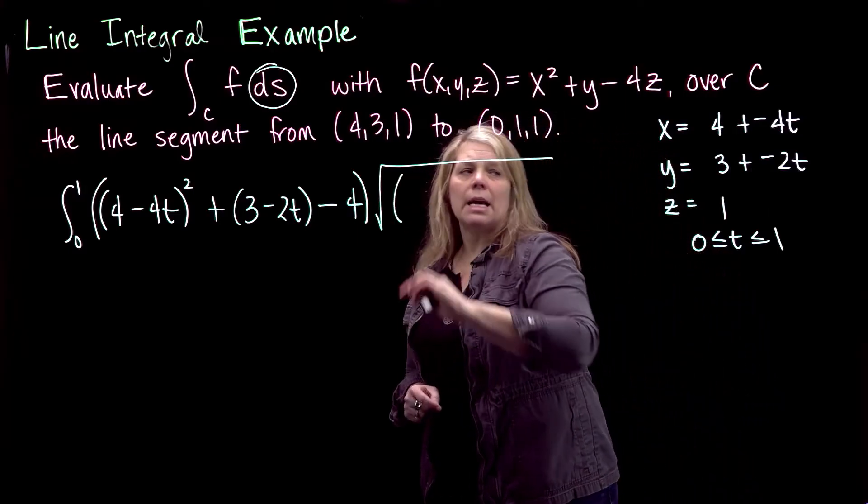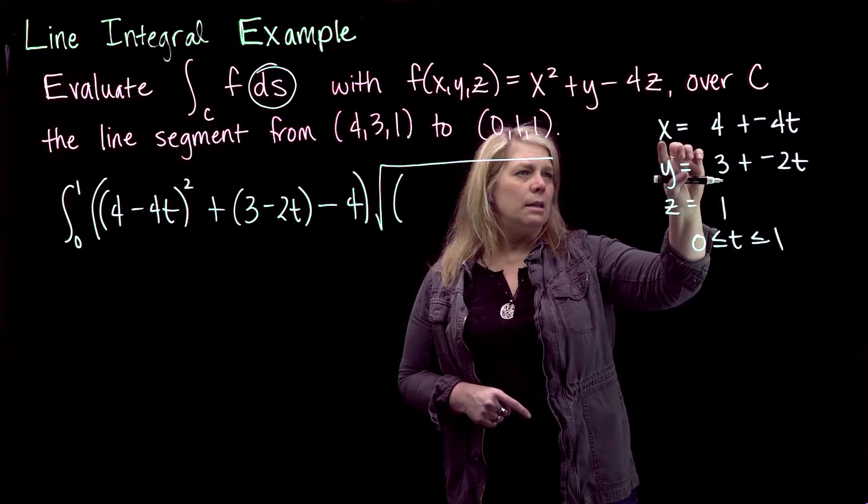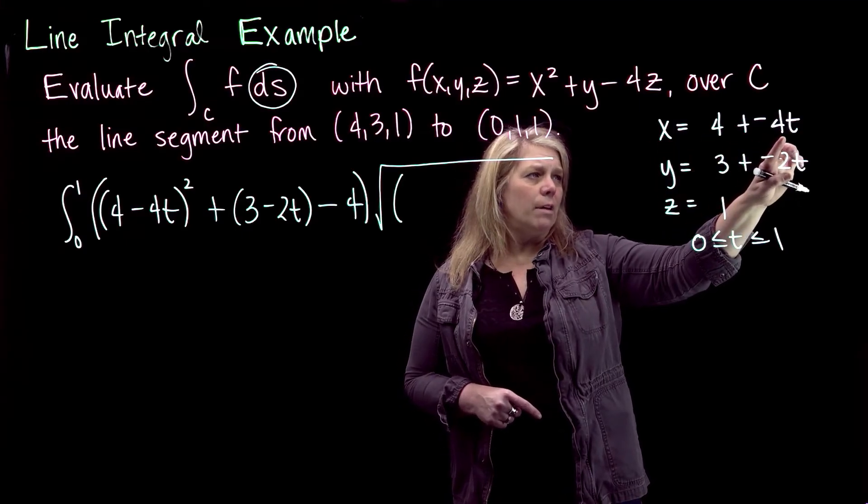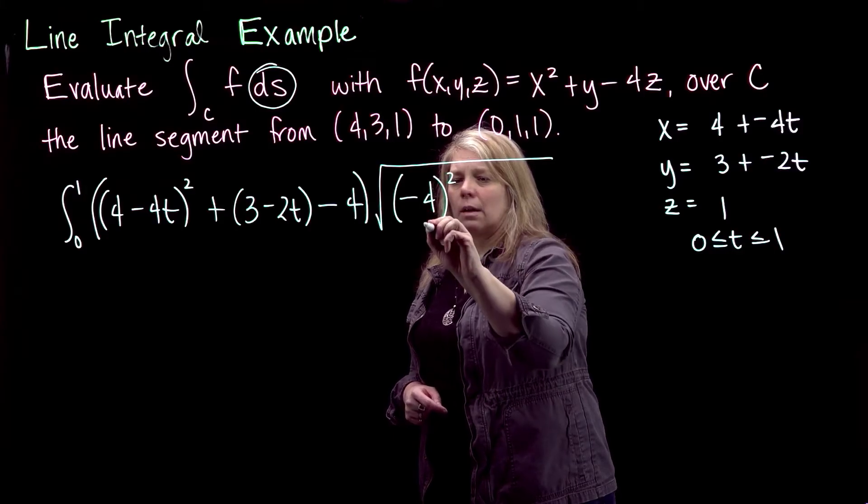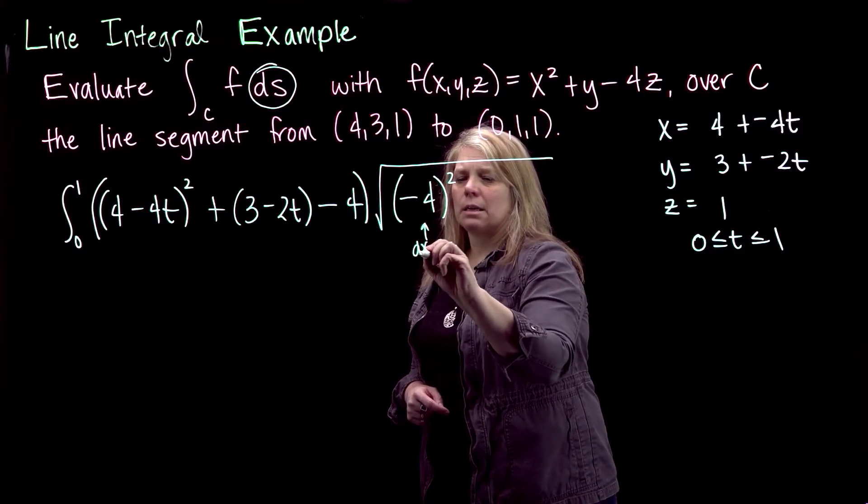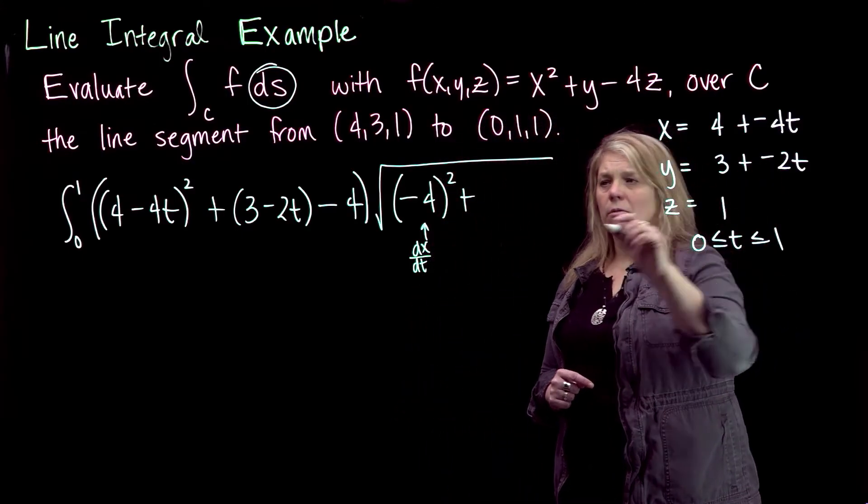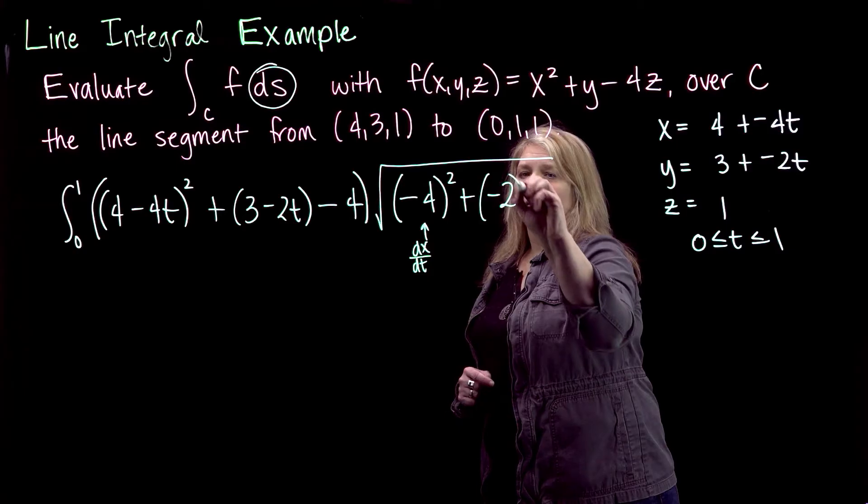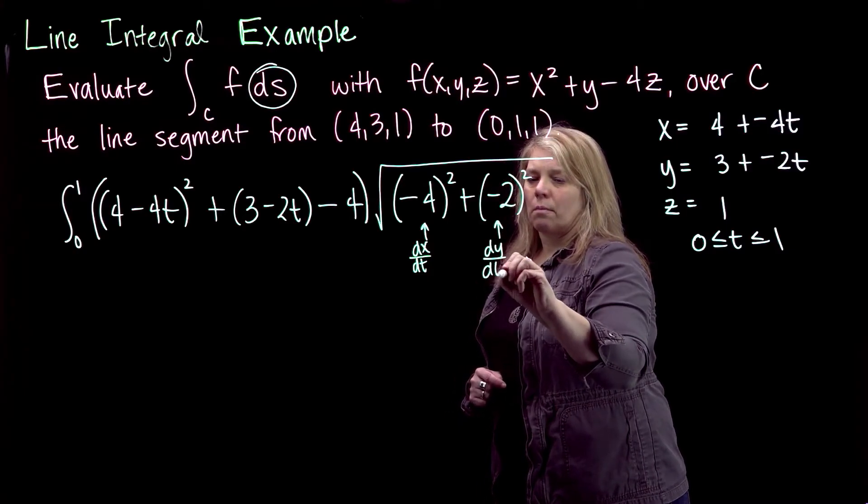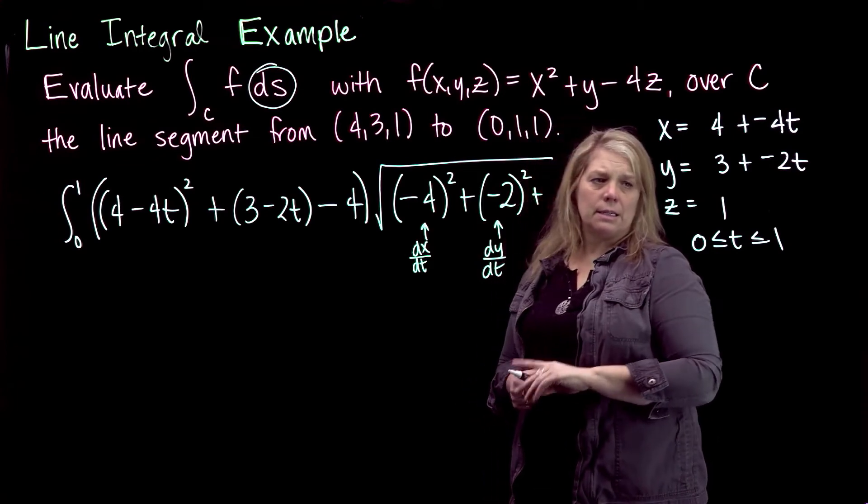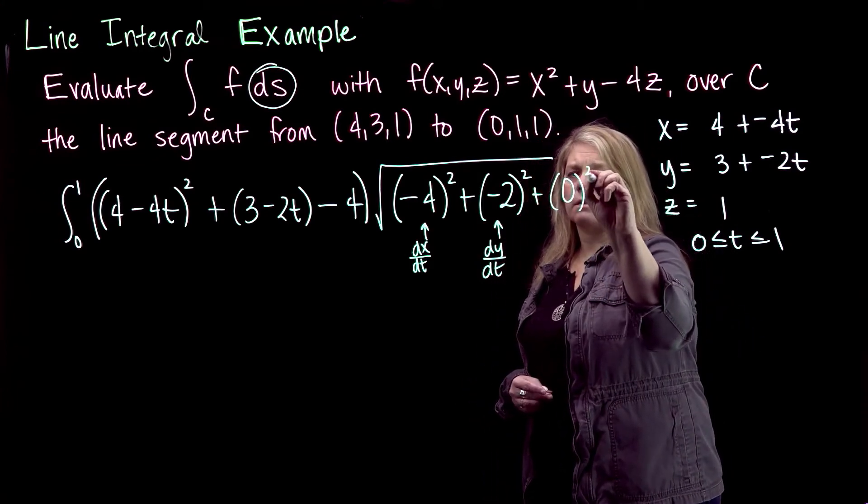Alright, so my dx/dt, that's going to come from here. If this is my x, then dx/dt will be the derivative of this with respect to t. So negative 4, and again, that's from my dx/dt, plus dy/dt, so that will be negative 2, the quantity squared, plus dz/dt, and dz/dt will be 0 here, since z is a constant function.